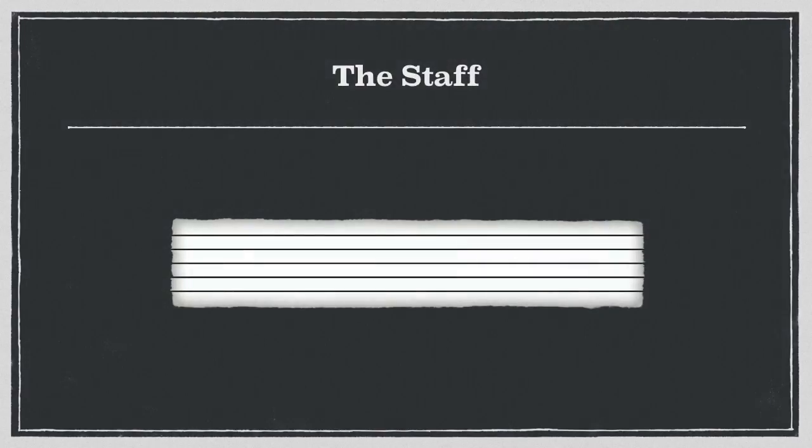The first step is to understand the staff. It has five lines and four spaces. We place notes either on top of a line or in a space. But before we know exactly what notes are on the staff, we have to add something else.